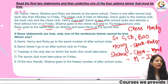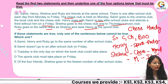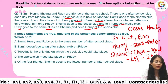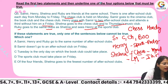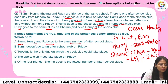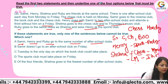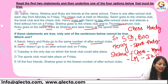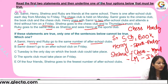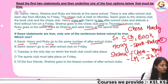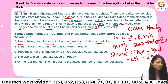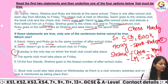Ruby goes to the same number of clubs as Shalma. Shalma goes to the chess club and music club, along with Henry on the sports club. Samir, Henry, and Ruby go to the same number of clubs. Samir goes to chess, cinema, and book club. Henry goes to sports club plus three clubs total.